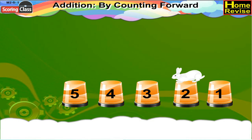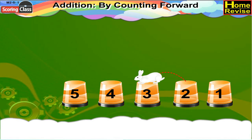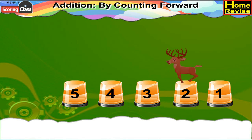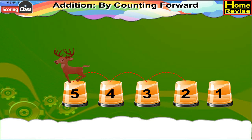Here is a rabbit on step 2. If it takes 1 more step after 2, it will be on step 3. Now a deer is standing on step 2. If the deer takes 3 more steps after 2, it will be on step 5.